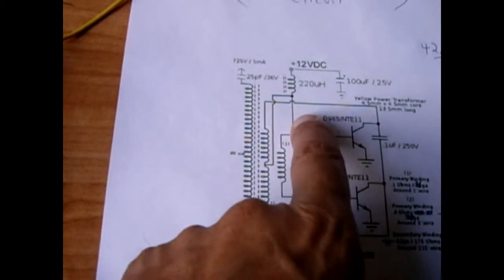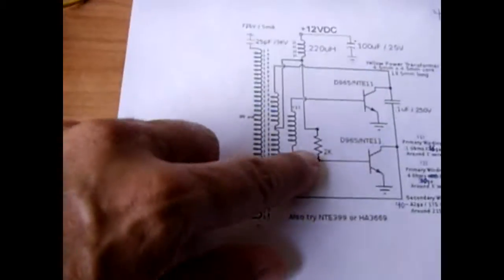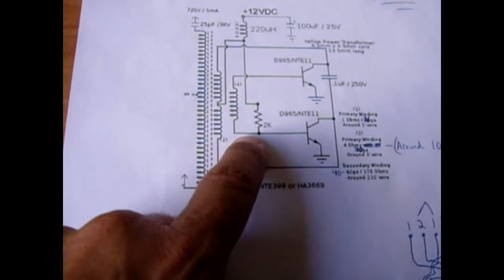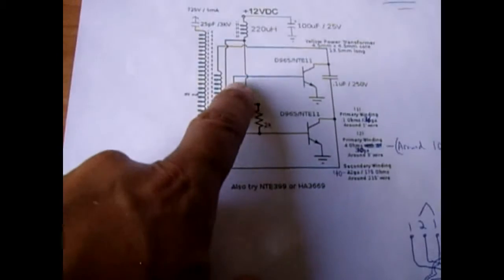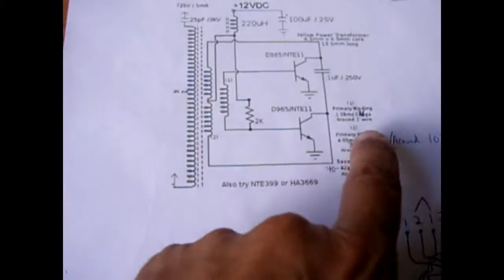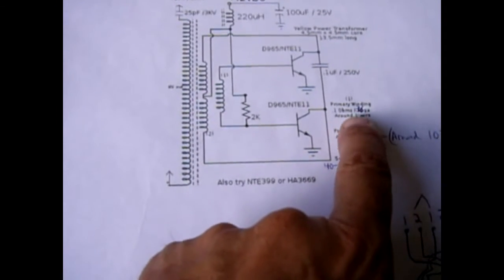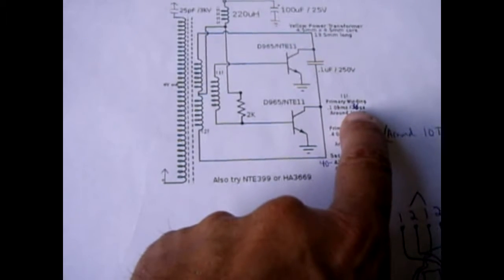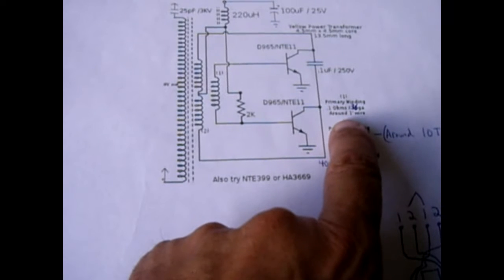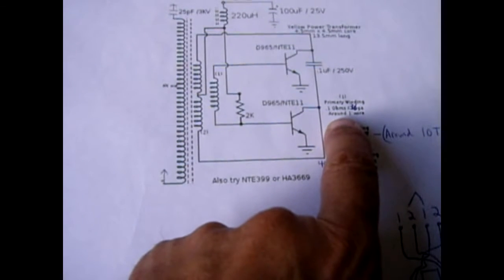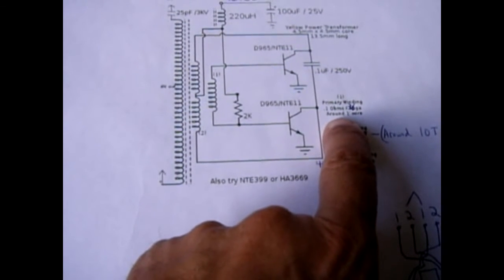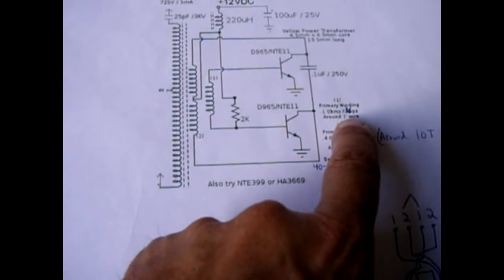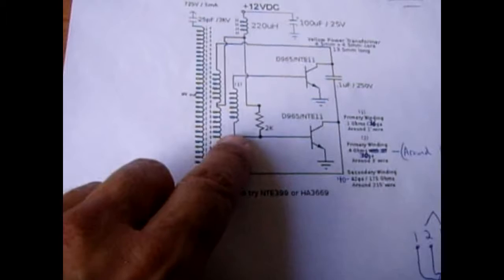From there it feeds straight into a 2k resistor and it goes into the base of this transistor. And it also connects to this coil which is number one, and number one is a primary winding which measures roughly 0.1 ohms and it is wound with 36 gauge wire. And how to do that, you're going to wind it around the core until you have roughly 0.1 ohms and then you could solder off the ends.